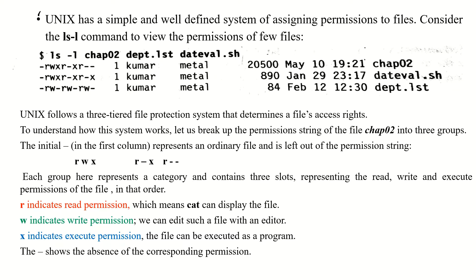Running ls -l on files such as chop2, department1.lst, and datewal.sh displays the permissions along with the owner, group owner, date, file size in bytes, and file type.